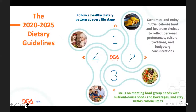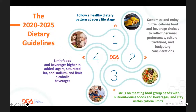The third guideline is to focus on meeting food groups with nutrient-dense foods and beverages and stay within calorie limits. The fourth guideline is limiting foods and beverages higher in sugars, salts, saturated fat, and sodium, and also limiting alcoholic beverages.